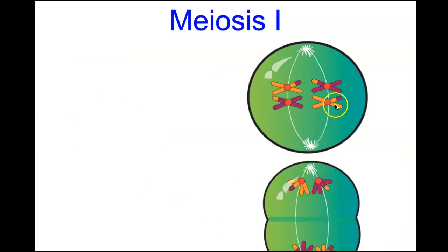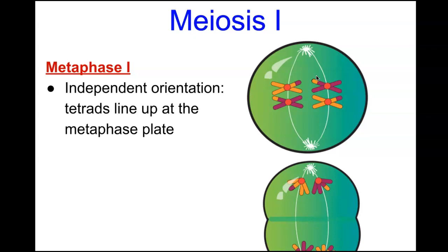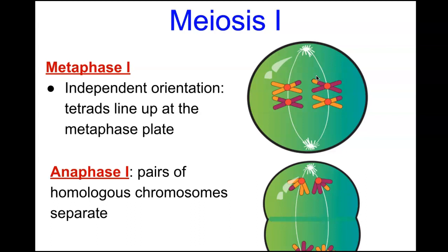You can see in the diagram that crossing over has taken place, showing differences in DNA. Then in metaphase I, we have independent orientation where tetrads line up along the metaphase plate, allowing independent assortment to take place — chromosomes assort or move away from each other independently. In anaphase I, the pairs of homologous chromosomes separate.